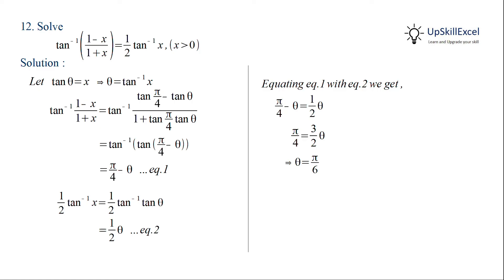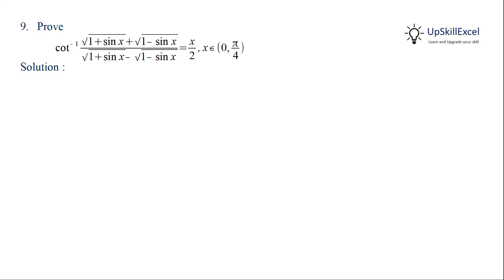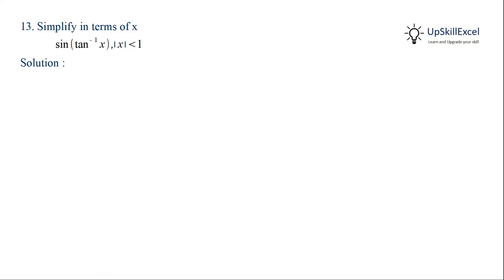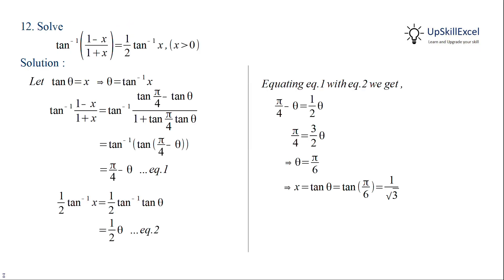Now, from our assumption, x is equal to tan theta. So x is equal to tan pi by 6, which is 1 by under root 3.